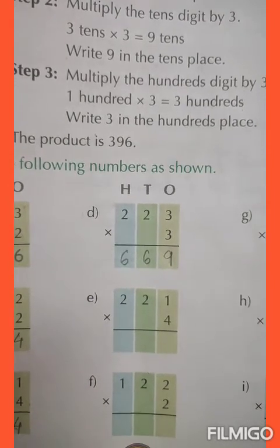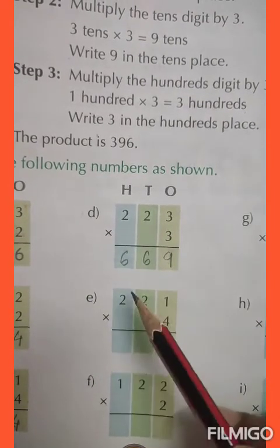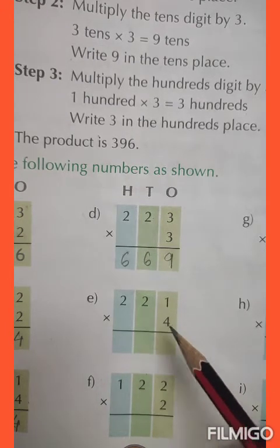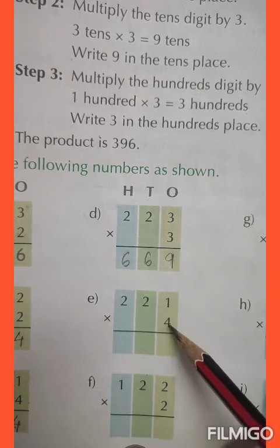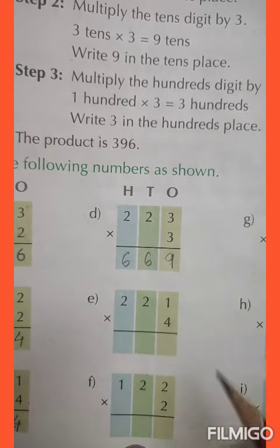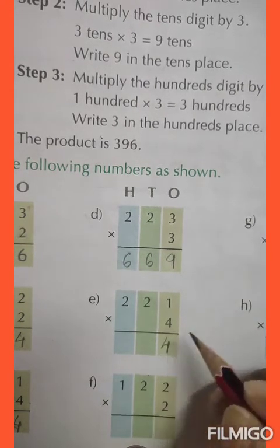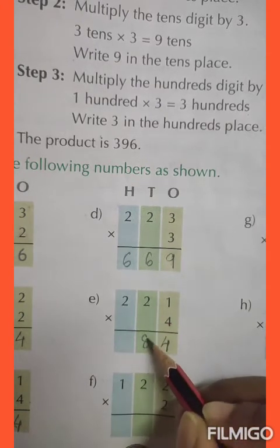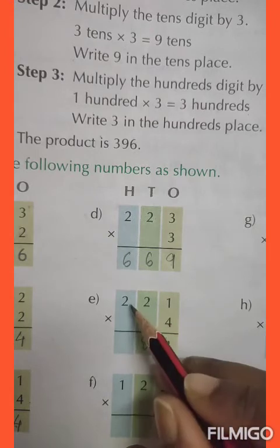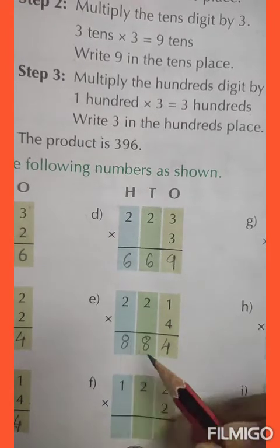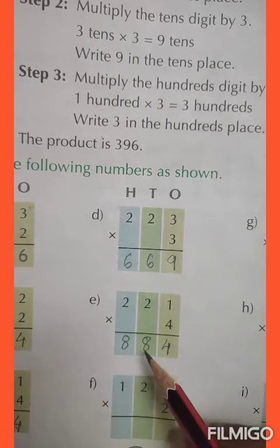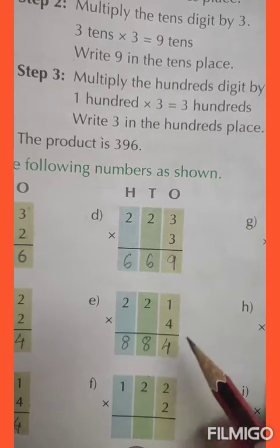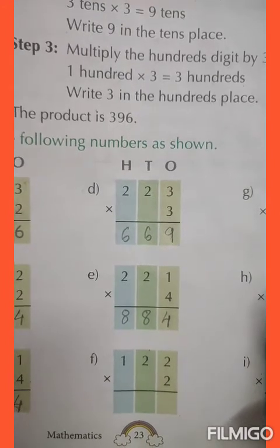Question number E, multiply 221 by 4. Let us multiply: 4 ones are 4, 4 twos are 8, 4 twos are 8. And the answer is 884. Let us move to the next number F.